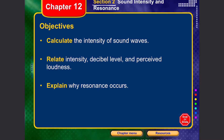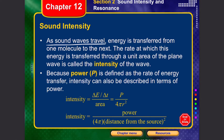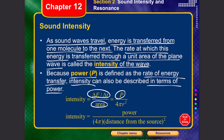Sound intensity is the rate at which energy is transferred through a unit area of a plane wave. Since power is the rate of energy transfer, intensity equals power divided by area: I = P / (4πr²), where we use 4πr² because sound waves are spherical and that is the surface area of a sphere. Here r represents the distance from the source. The unit of intensity is watts per square meter (W/m²).